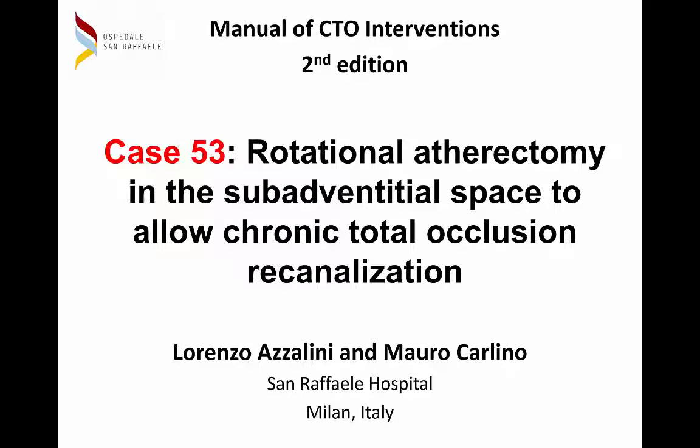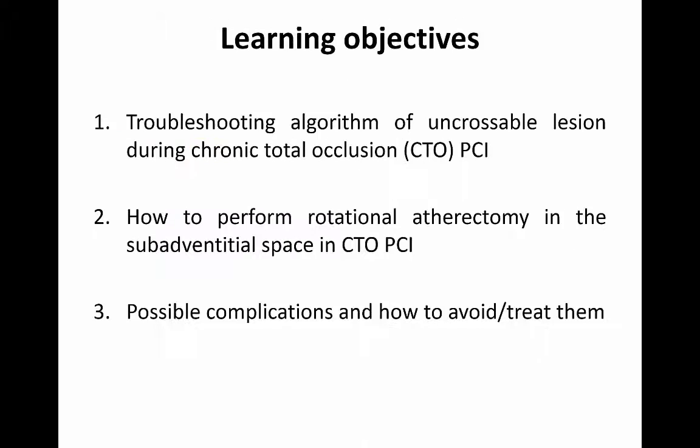This is a case about rotational atherectomy in the subadventitial space to allow chronic total occlusion re-canalization. There are three learning objectives: a troubleshooting algorithm of uncrossable lesions during CTO-PCI, how to perform rotational atherectomy in the subadventitial space in CTO-PCI, and what are the possible complications and how to avoid and treat them.